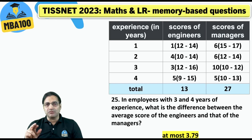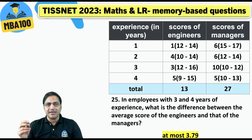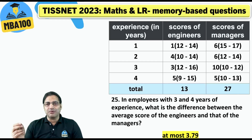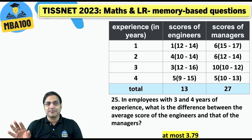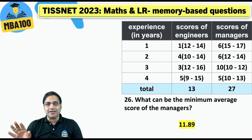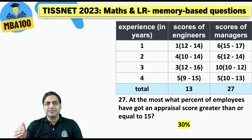This was one of the better questions — it had some flavor of CAT's DILR. The answer is at most 3.79. Here the answer was 11.89.